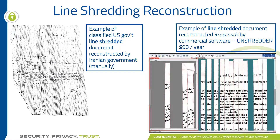Here's an example of line shredding. On the left, the Iranian government found all the pieces of a document shredded by the US government and put it all back together manually. On the right is an example of software that can put shredded documents back together. Cross shredding shreds the document into tiny snowflake squares so it's very difficult to put back together. And if you're super paranoid, you could just burn the documents too.